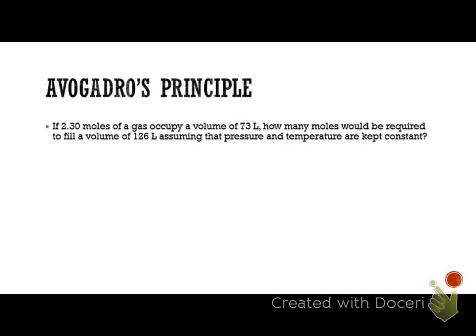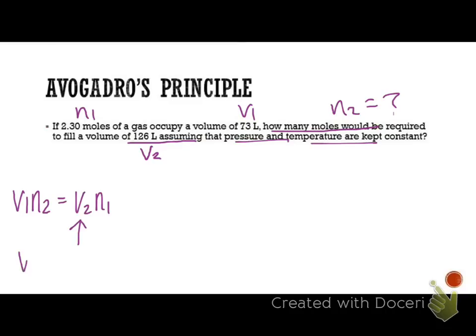This time we have if 2.3 moles, that's going to be our N1, occupies a gas at this volume, that's going to be V1, how many moles, that's what we're going to be looking for, are required, or would be required to fill 126 liters, assuming that pressure and temperature are kept constant. So that's going to be V2. So let's go to this, V1 N2 equals V2 N1. We are solving for V2, so it should look like this when we isolate, V2 is equal to V1 N2 over N1.